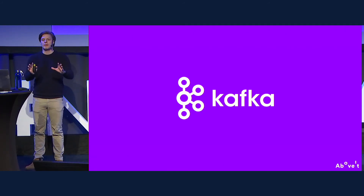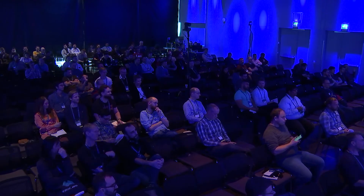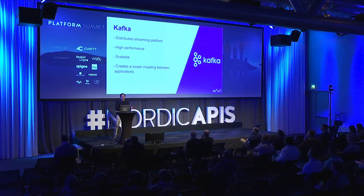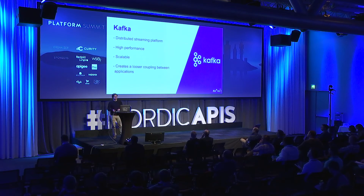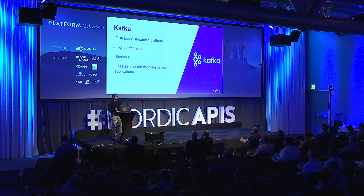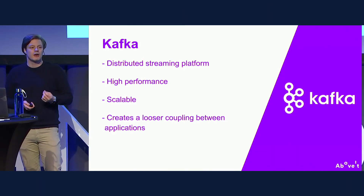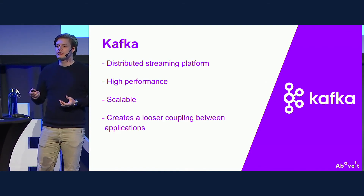To solve this, we introduced Kafka. Kafka is a distributed streaming platform — high performance, capable of processing billions of messages per day, scalable, with built-in redundancy, making it easy to use even for larger mission-critical applications. A very important benefit for us at Entour was that using a streaming platform like Kafka created looser couplings between each data module.